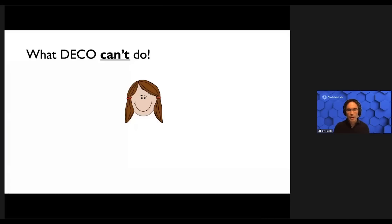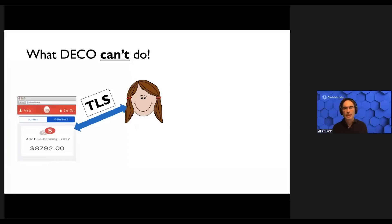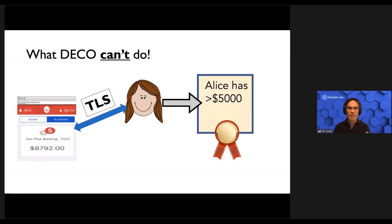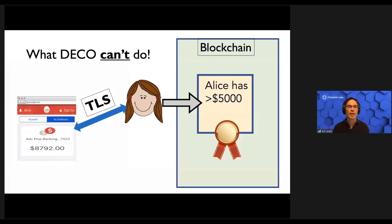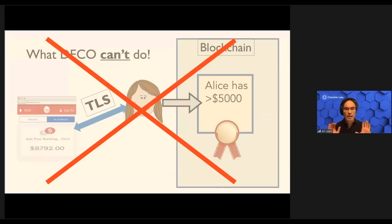Before I wrap up, I want to be clear about one thing that Deco can't do. A user can't log into a website and then unilaterally — on her own — generate a trustworthy Deco proof to put directly on chain. Deco cannot generate such proofs directly. You need to have the Oracle network in the loop.